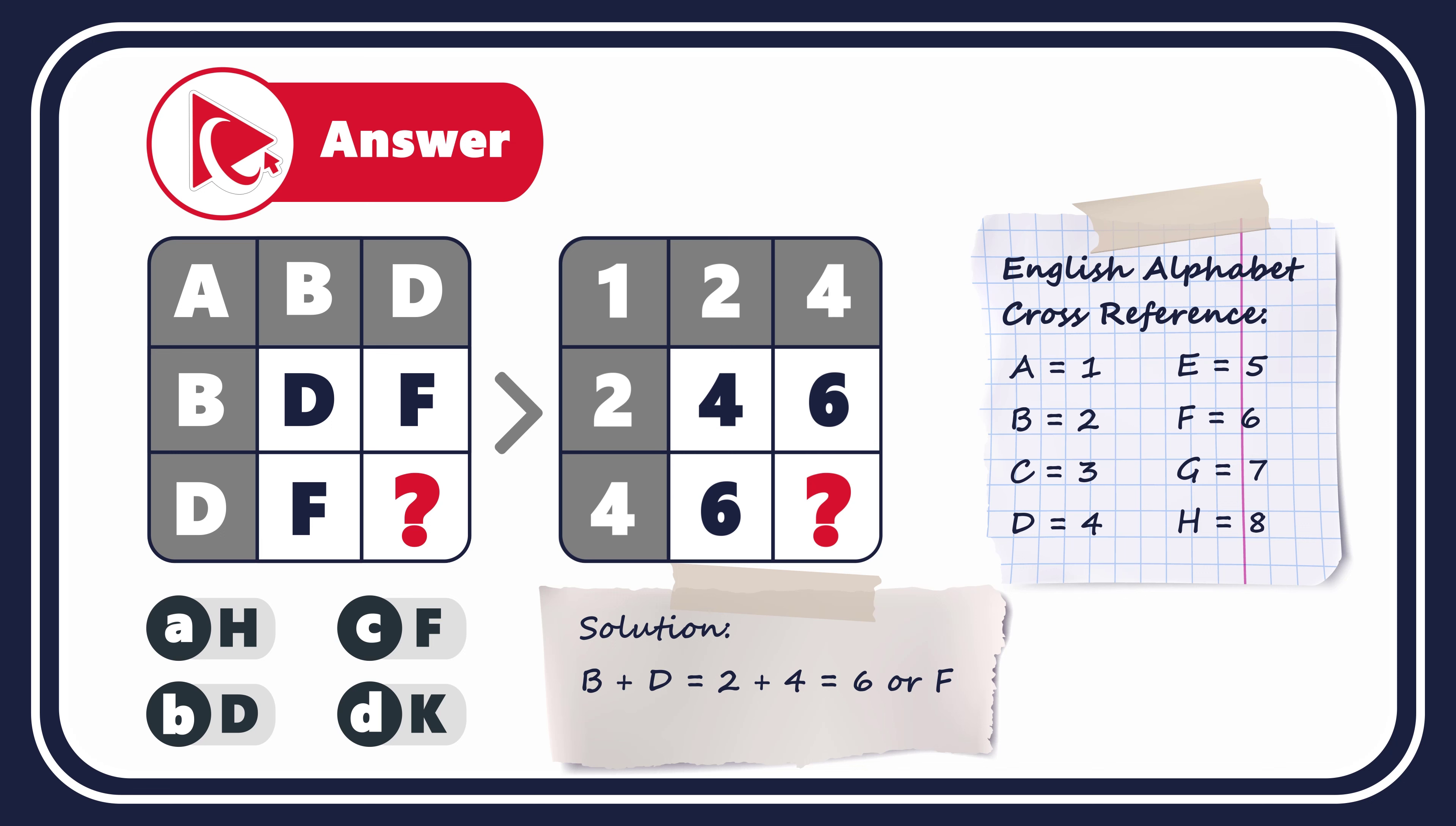This is the result of the calculation in the third row, which would mean that the missing number on the intersection of 4 and 4 will be calculated as addition of 4 plus 4, which would be equal to 8. So the correct answer here is choice A, H, because H is the letter that corresponds to the number 8.